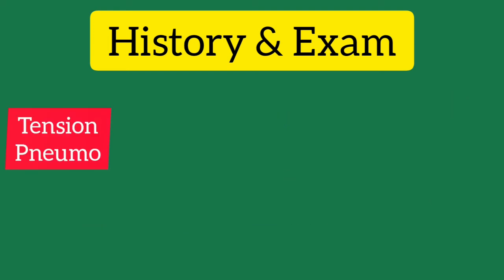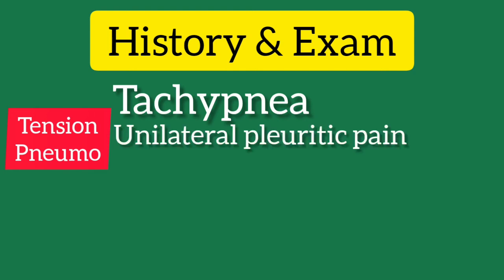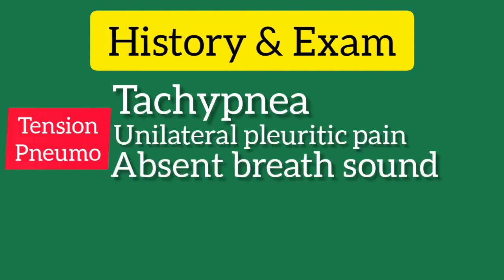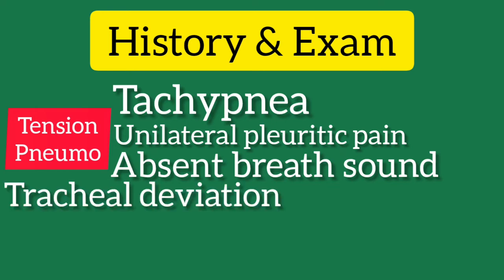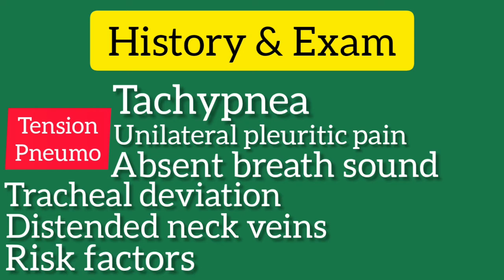Tension pneumothorax should be suspected in a patient with undifferentiated shock who has tachypnea, unilateral pleuritic chest pain, absent or diminished breath sounds, tracheal deviation to the normal side, distended neck veins, and risk factors such as recent trauma, mechanical ventilation, and underlying cystic lung disease.